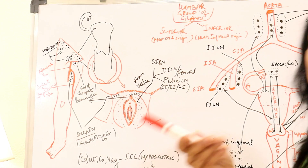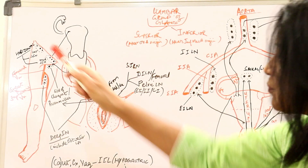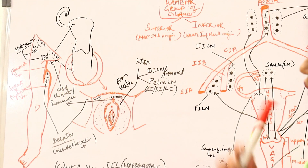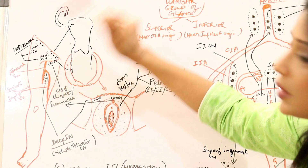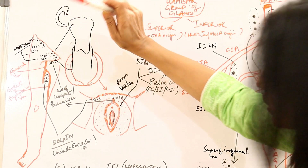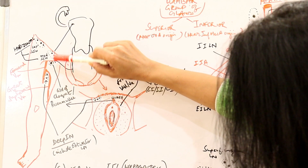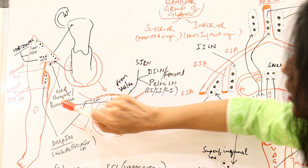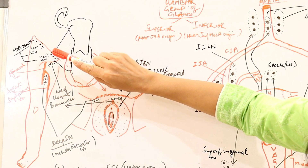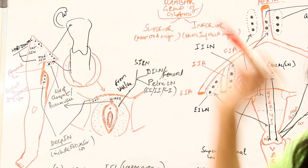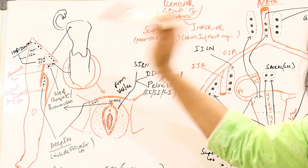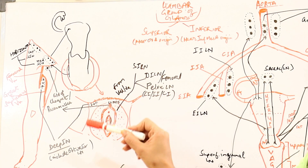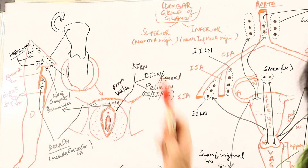Inguinal lymph nodes are both superficial and deep. In superficial, there are two groups: horizontal and vertical. The horizontal group has lateral and medial lymph nodes. The vertical group, which is the most proximal part, is the gland of Cloquet, or Rosenmuller's gland. It is just below the inguinal ligament, located in the femoral canal, and is directly involved in clitoris cancer.